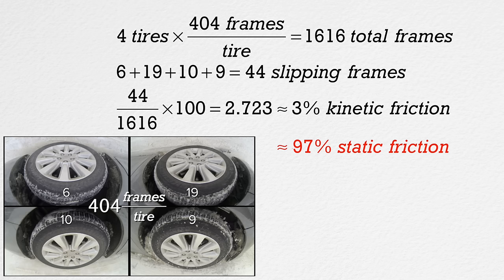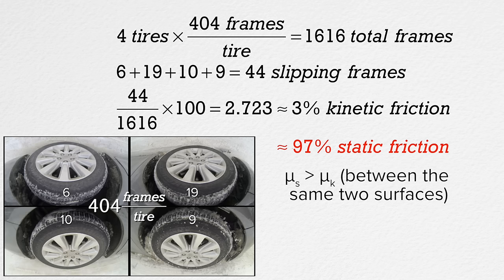I think we can conclude that at 97% static friction, anti-lock brakes are almost entirely static friction. Static friction is more effective at slowing the vehicle down because, for any two surfaces, the coefficient of static friction is greater than the coefficient of kinetic friction. Thank you very much for learning with me today. I enjoyed learning with you.